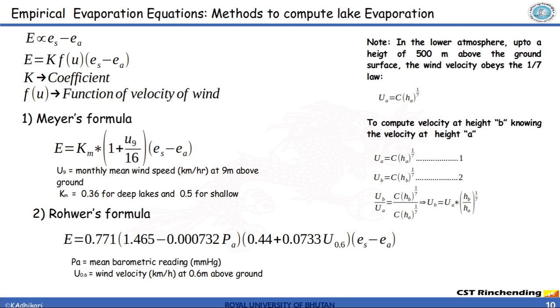These numerical formulas, the Mayer formula and the Rohwer formula, are based on Dalton's law of evaporation which states that evaporation is directly proportional to the difference in saturation vapor pressure and the actual vapor pressure of the air.